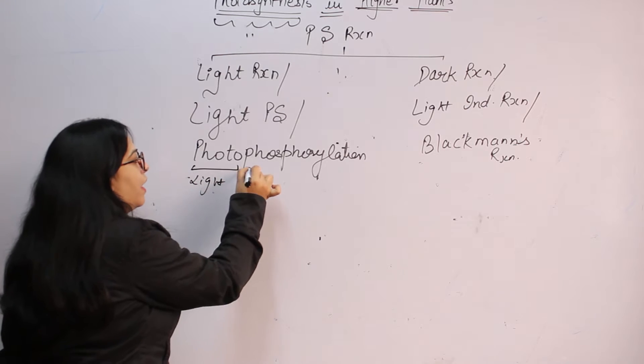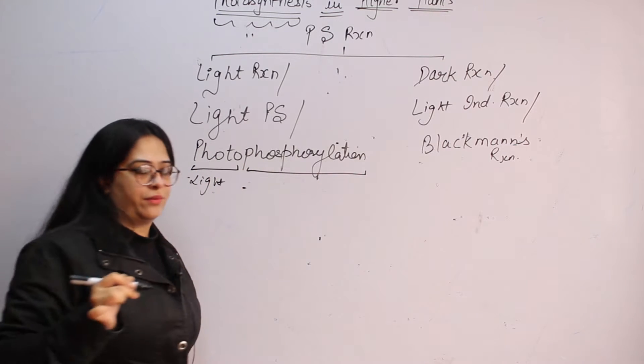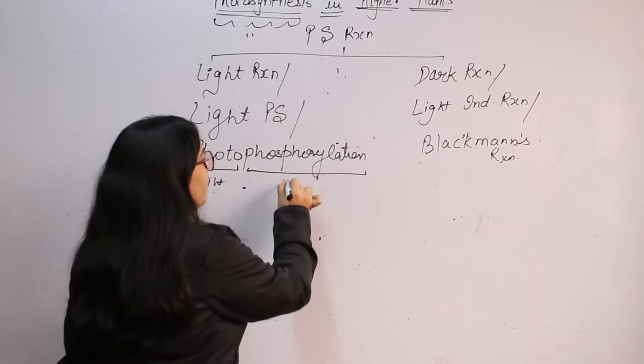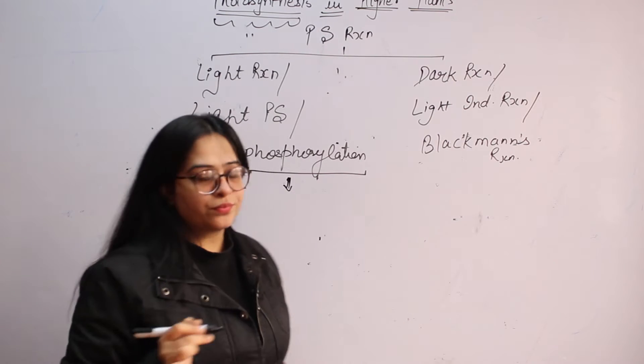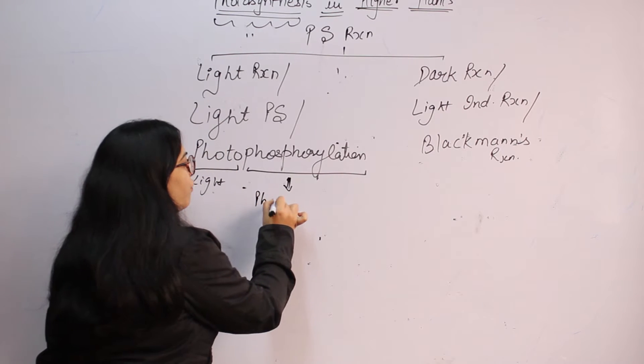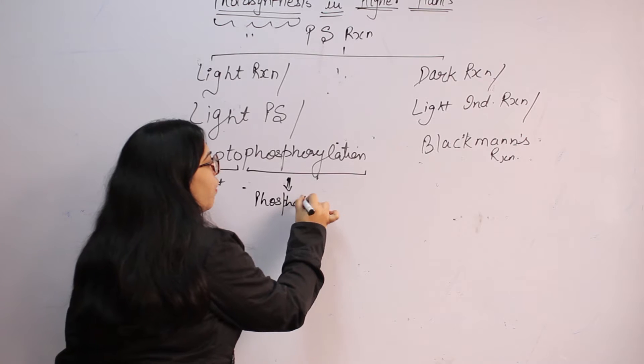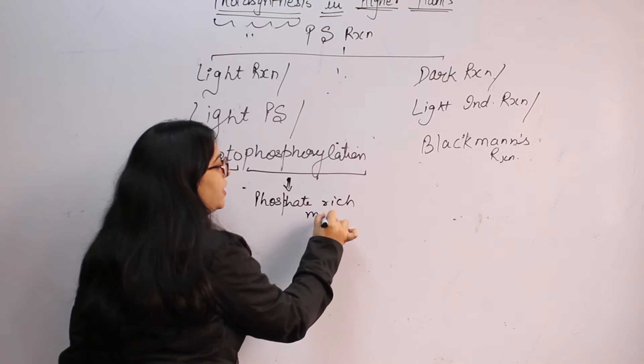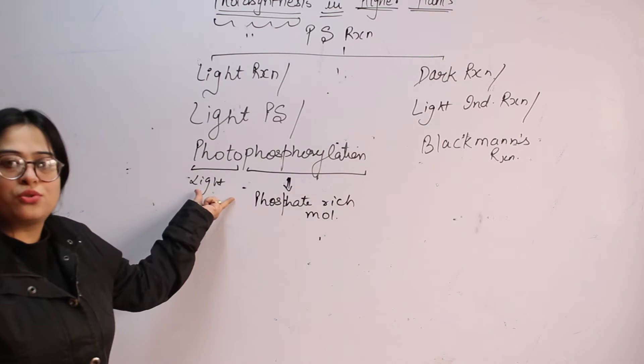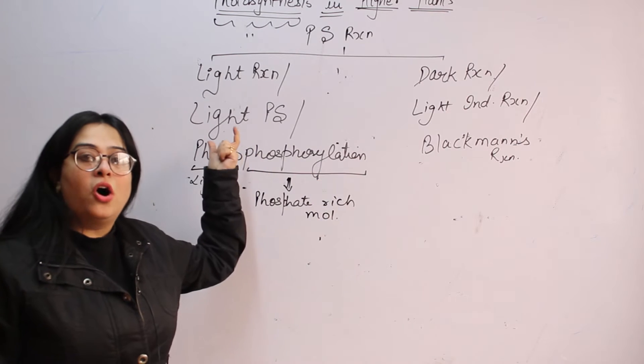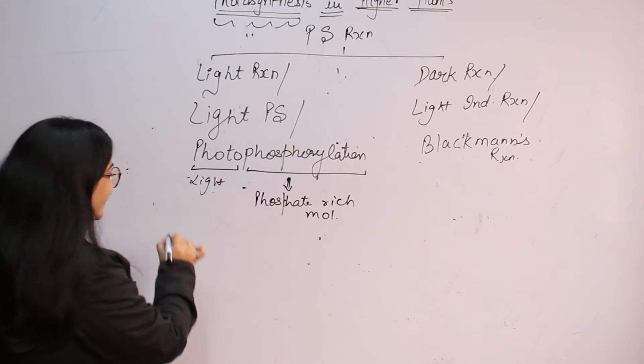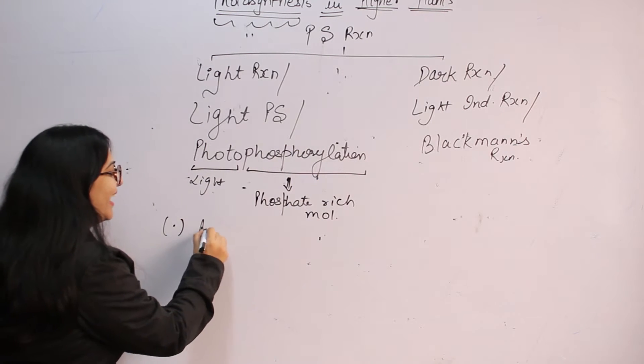Photo means light. Phosphorylation means formation of phosphate rich molecules. So formation of phosphate rich molecules in the presence of light is photophosphorylation or is light reaction. That is here ATP will be formed in the presence of light.